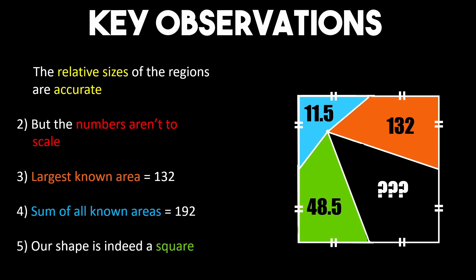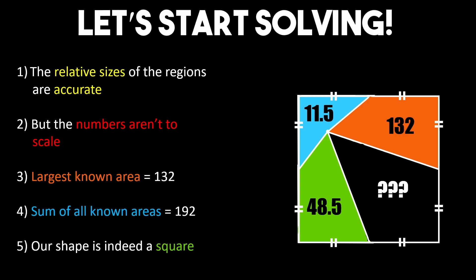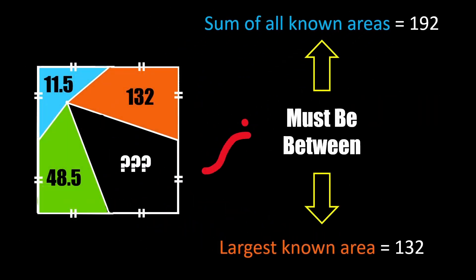But now with our observations out of the way we can move on to solving for the area algebraically. If you wrote in the comments that the two numbers we found in our observations create a lower and upper bound for our unknown area then congratulations because you were correct.